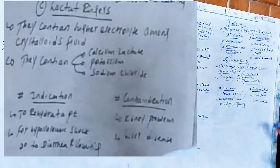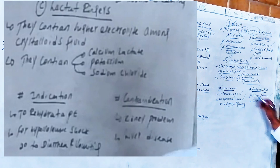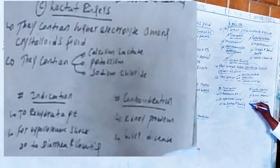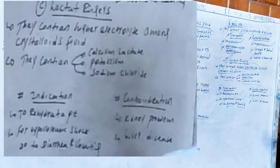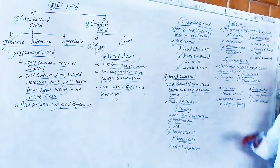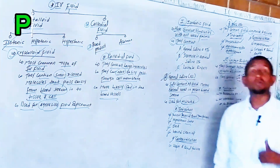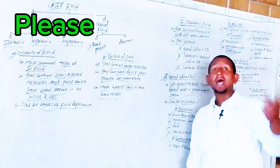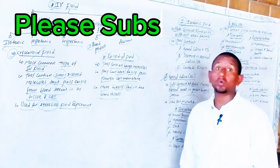What are the contraindications for Ringer's lactate? It is contraindicated when the patient has a kidney problem or a liver problem. The next video will cover hypotonic and colloidal fluids.